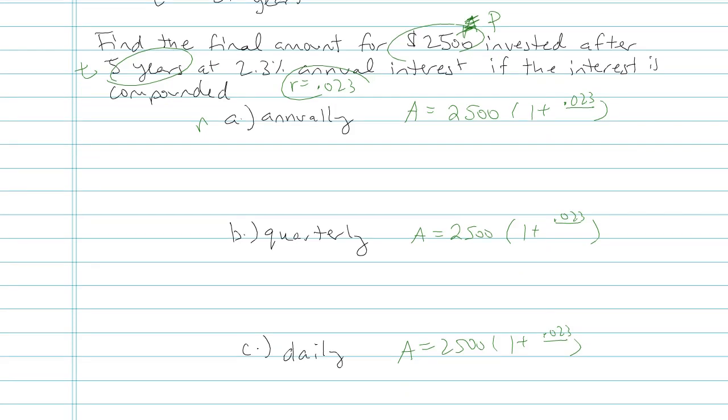So compounding annually, that means only once per year. N equals 1. And it shows up again in my exponent, 1 times, and then we're doing 5 years. Okay. So let's clean that up a little bit.